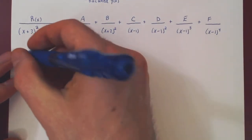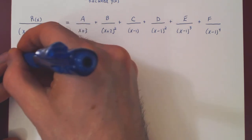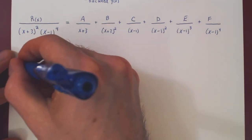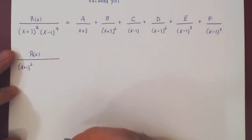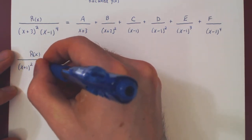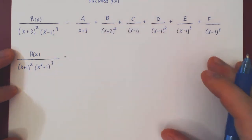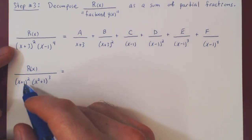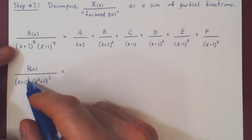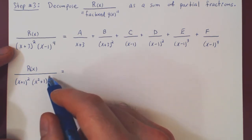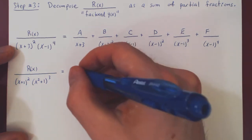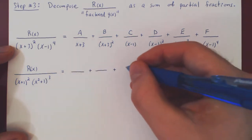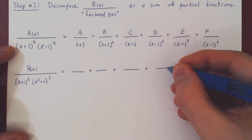What if we have R of x divided by x plus 1 squared times x squared plus 1 cubed? So again we first look at our denominator. We have x plus 1 with a power of 2, which will give us two partial fractions, and x squared plus 1 to the 3rd, which gives three partial fractions.